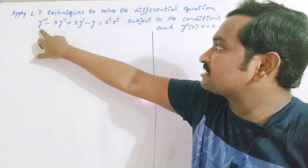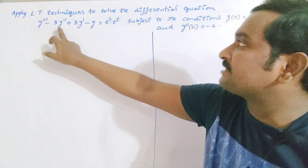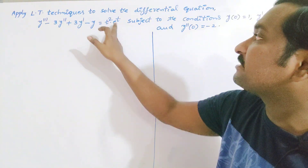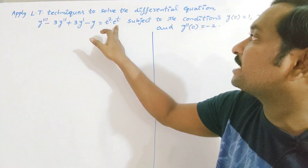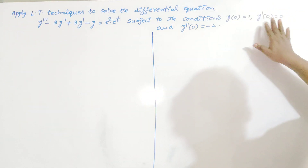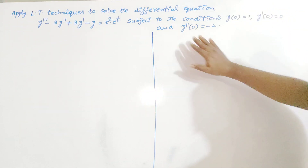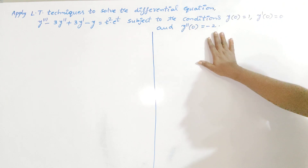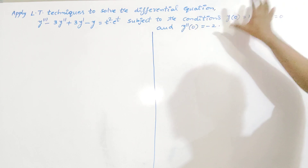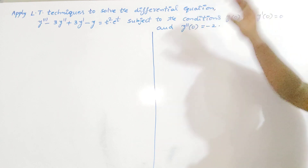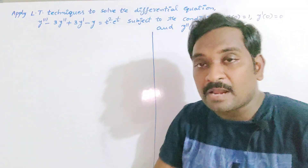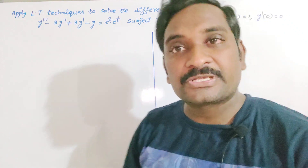This is the given differential equation: y triple dash minus 3y double dash plus 3y dash minus y is equal to t squared times e to the power t, subject to the conditions y(0) = 1, y'(0) = 0, and y''(0) = -2. These are known as initial conditions, and we have to find the solution using Laplace transformation techniques.